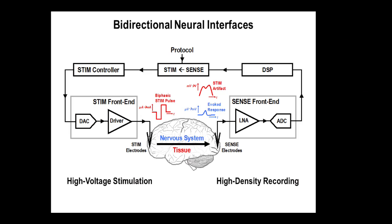The stimulation front end needs to provide up to 2 milliamps of current and be high-voltage tolerant, because the electrodes used to interface with the nervous system are relatively high impedance. On the other side, a sensing front end consists of a low-noise amplifier and an analog-to-digital converter that records microvolt-level signals from neuron cells. The problem arises when you try to do both simultaneously, as in a medical feedback loop: the high voltages up to 10 volts created by stimulation propagate through the nervous tissue into the recording front end, which is tuned for microvolt-level signals.